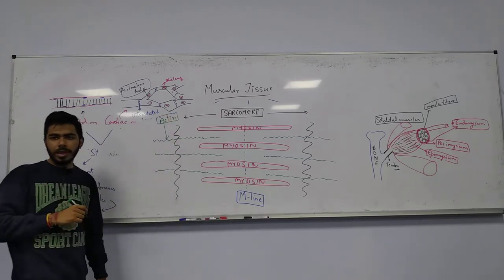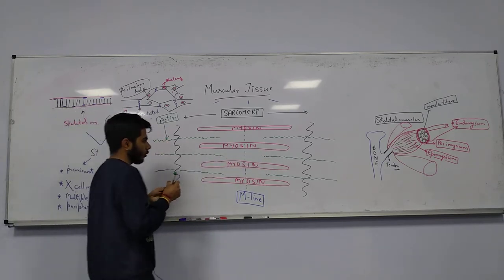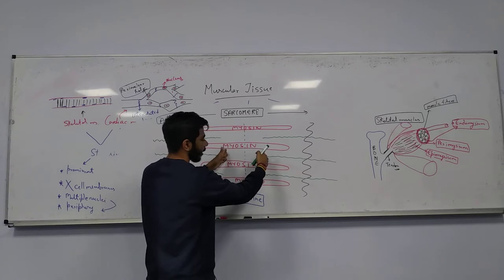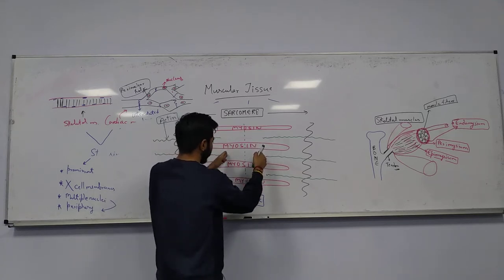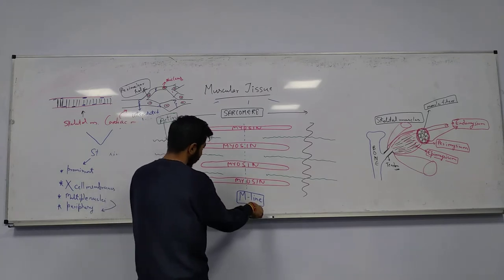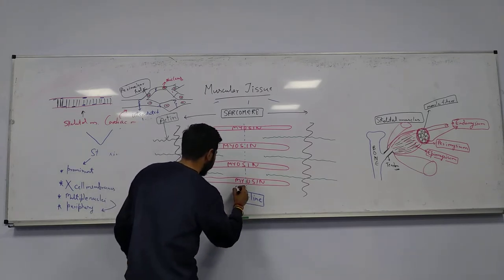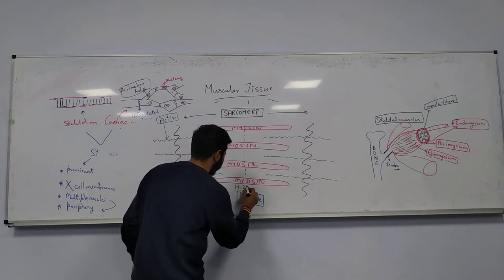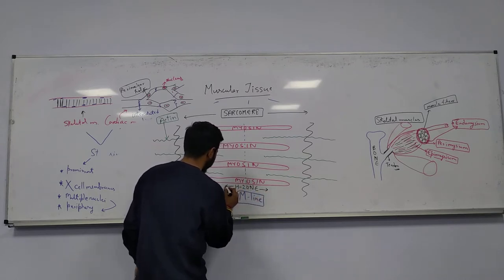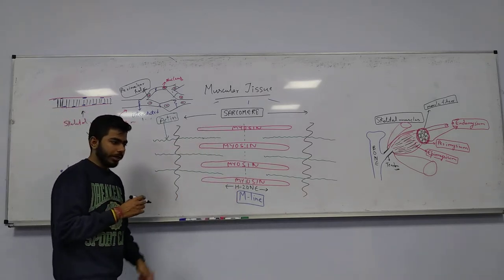This is the actin filament and these are the myosin. Now look at this space where the actin filaments are ending — the space between them. We call this space the H zone.